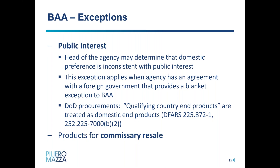The next exception is based on public interest — the head of the agency may determine that domestic preference is inconsistent with the public interest. This exception applies when the agency has an agreement with a foreign country that provides a blanket exception to BAA. The Department of Defense uses this public interest exception to waive BAA for countries that have entered a reciprocal procurement memorandum of understanding with the U.S., and those qualifying country end products would be treated as domestic end products. Finally, there's an exception for products for commissary resale, which applies to items purchased by the contracting agency for resale at military bases.